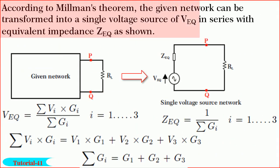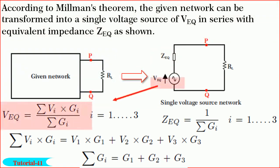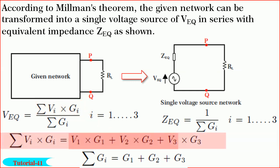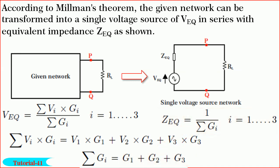Friends, we know according to Millman's theorem, the given network can be transformed into a single voltage source network of V-equivalent in series with Z-equivalent connected across the load branch, where V-equivalent is equal to summation of V_i·G_i divided by summation of G_i. In this case, summation of V_i·G_i is equal to V1·G1 plus V2·G2 plus V3·G3. And Z-equivalent is equal to 1 divided by summation of G_i, which is 1 divided by G1 plus G2 plus G3.